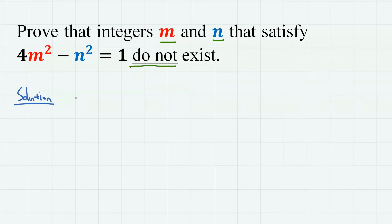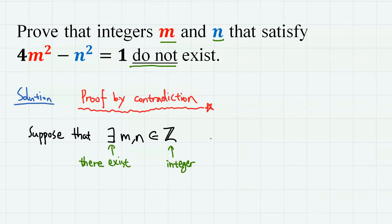And without further ado, let's dive right into the proof. Obviously we have to use proof by contradiction. So let us suppose that there exists integers m,n that satisfy 4m² - n² = 1. Then we have 4m² = n² + 1.